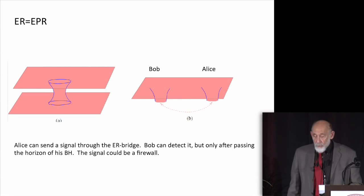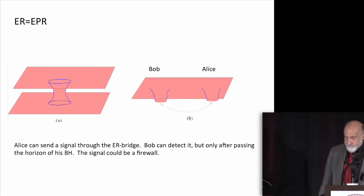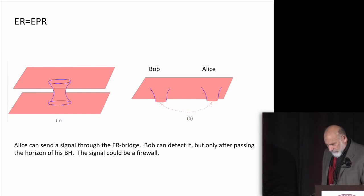As Juan said, Alice can jump into one end. If the Einstein-Rosen bridge is big enough, she might survive for a while. Bob can jump into the other end, and they can meet at the center for sort of short whatever it is that Alice and Bob do when they get together. And as Juan said, they won't last very long, but they might be happy for a short period of time.